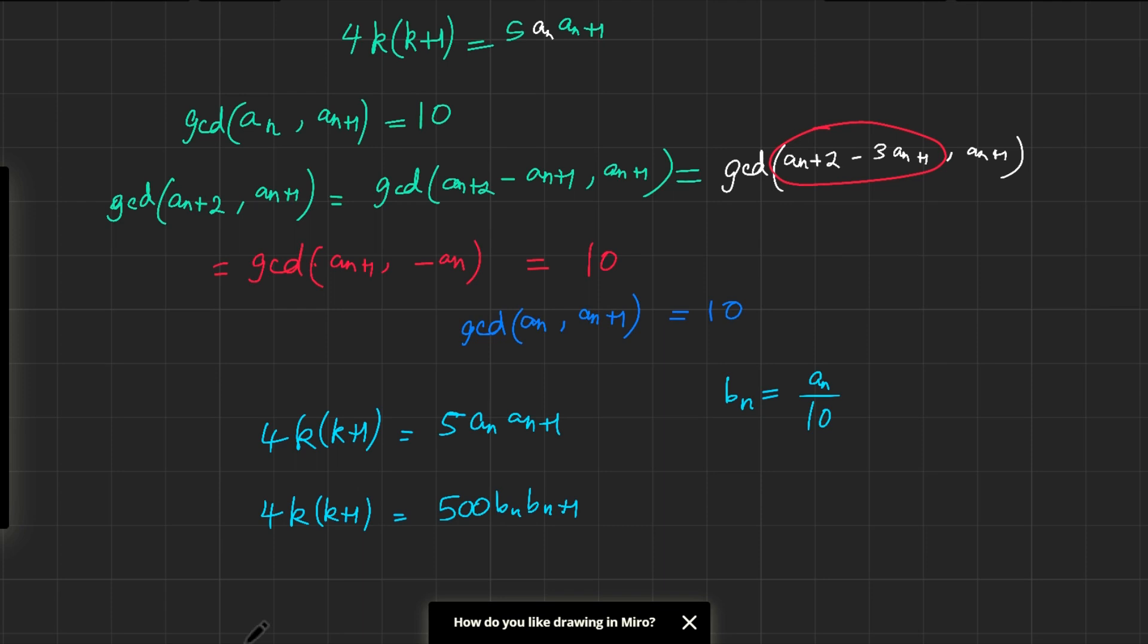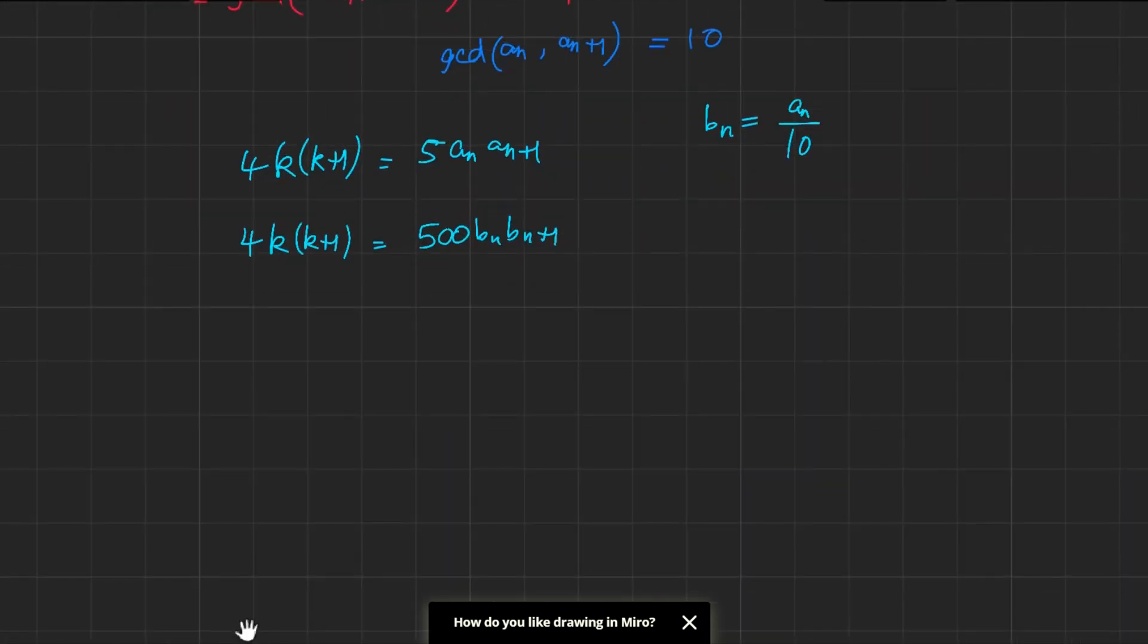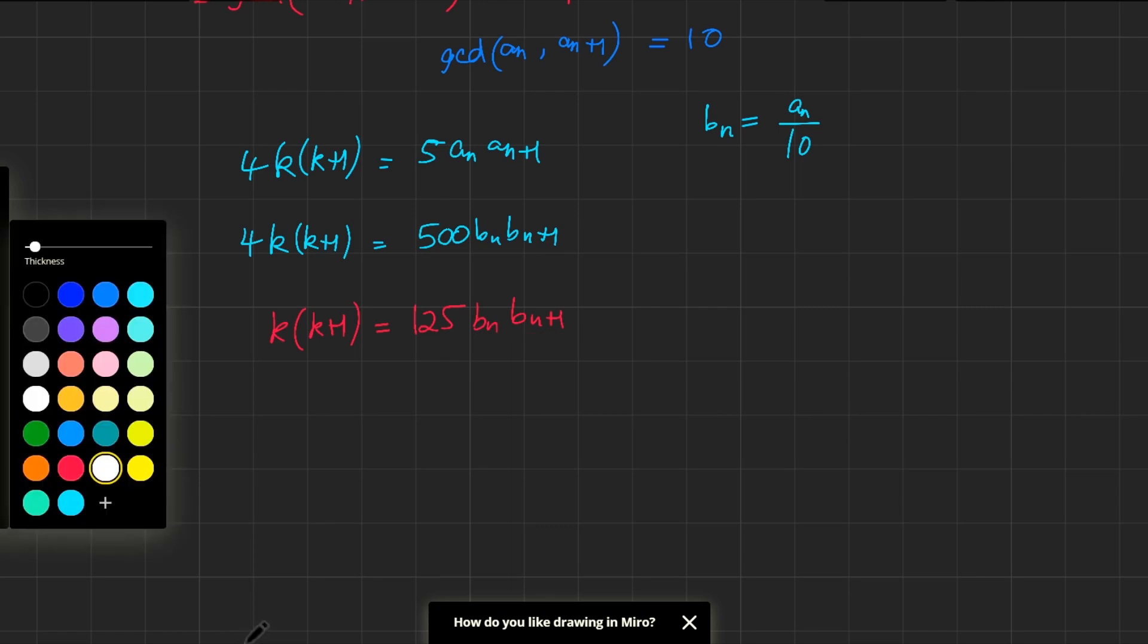But bₙ and bₙ₊₁ are actually coprime. Why is that? Because aₙ and aₙ₊₁, their greatest common divisor was 10. But once you divide by 10, you get that the greatest common divisor of bₙ and bₙ₊₁ is actually 1. So they're coprime. And we can simplify this. That's k(k+1) equals 125bₙbₙ₊₁. This is coprime with this and this is coprime with this. So we can just do some direct substitution. Let's just go through cases.